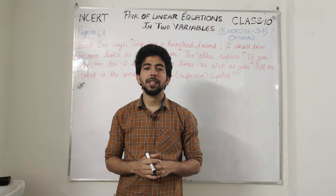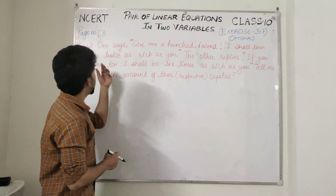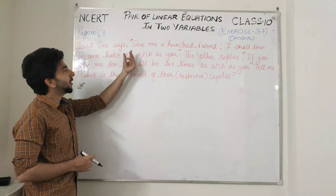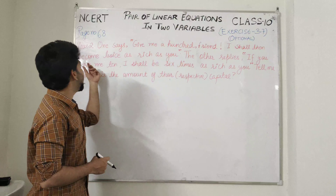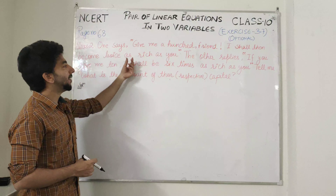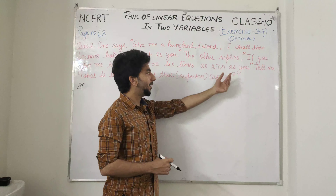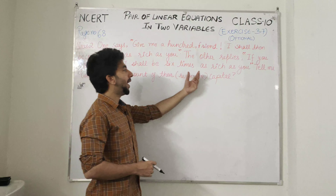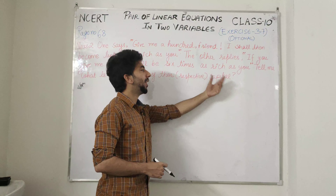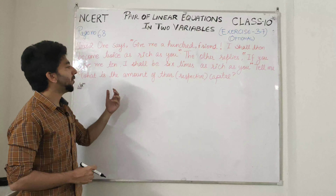This is exercise three, question number two. One says: give me a hundred, friend, I shall then become twice as rich as you. The other replies: if you give me ten, I shall be six times as rich as you. Tell me what is the amount of their respective capital.